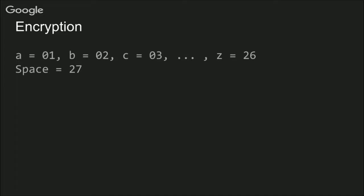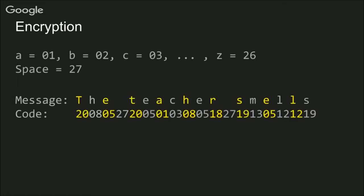Here's a simple encryption method where each letter is represented by its spot in the alphabet and space is 27. Then you can encrypt your message and your friend can decrypt it by doing the reverse of what you did. But if your teacher intercepts the note, she won't be able to read it unless she knows how to decode it.